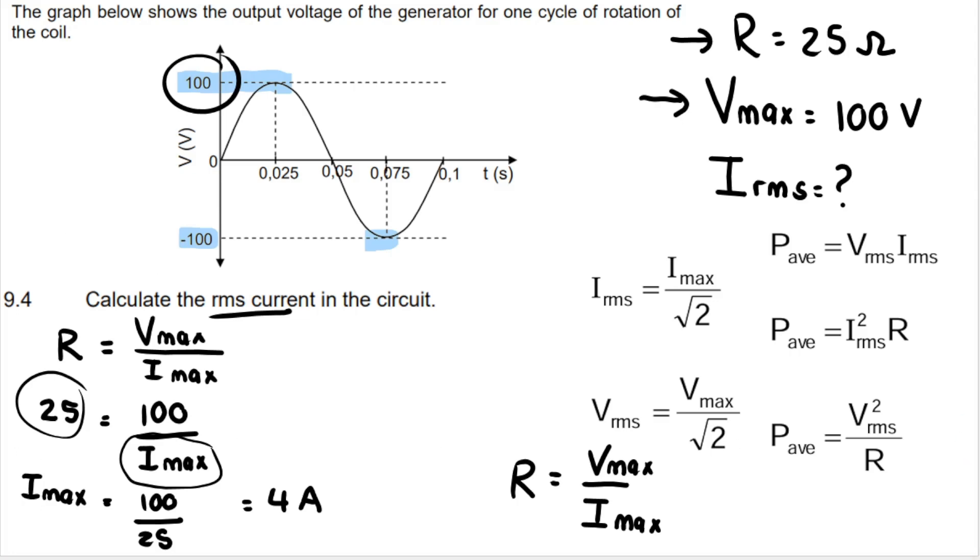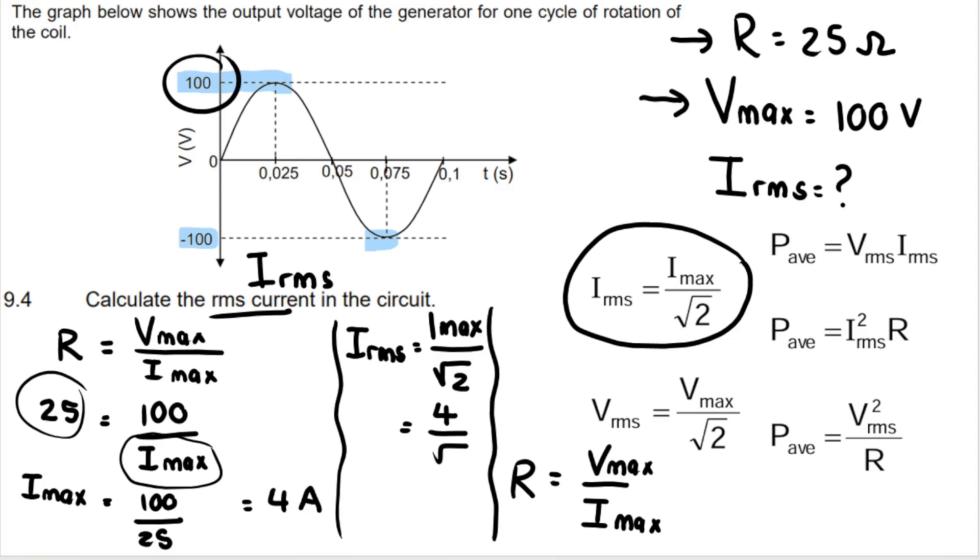We have Imax. And what the question wants is Irms. Once you have Imax, getting Irms is very, very easy and straightforward because you just need this formula over there. So we first have to use Ohm's law to get Imax. Then once you have Imax, we make use of Irms, the following formula. Irms is equal to Imax over square root two. We sub in. So Imax is four divided by square root of two.